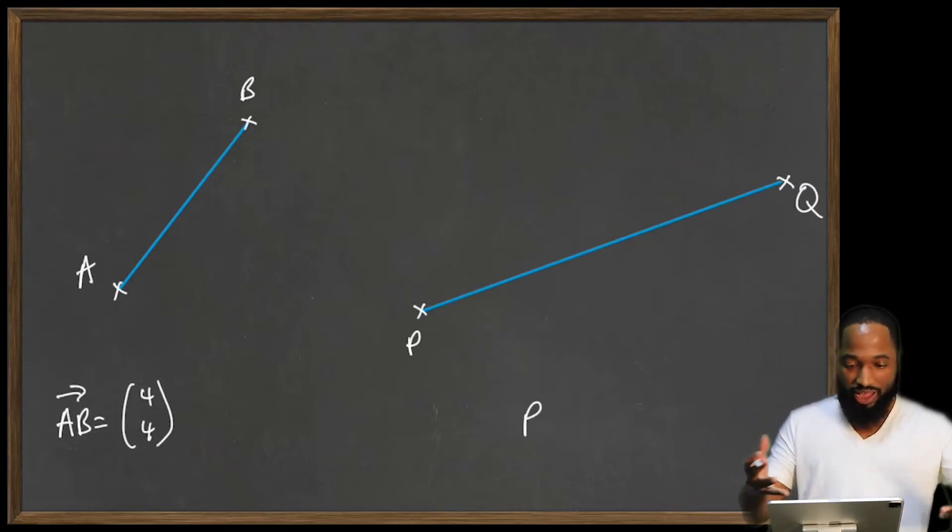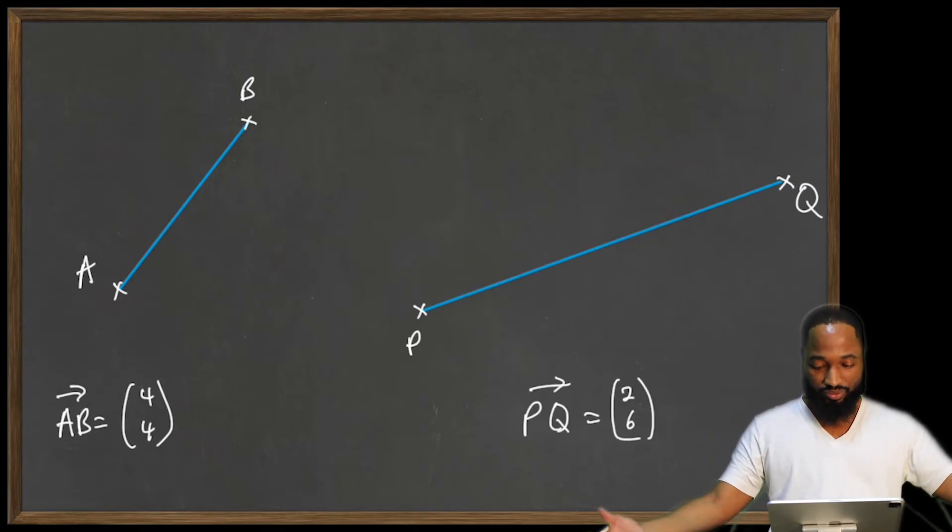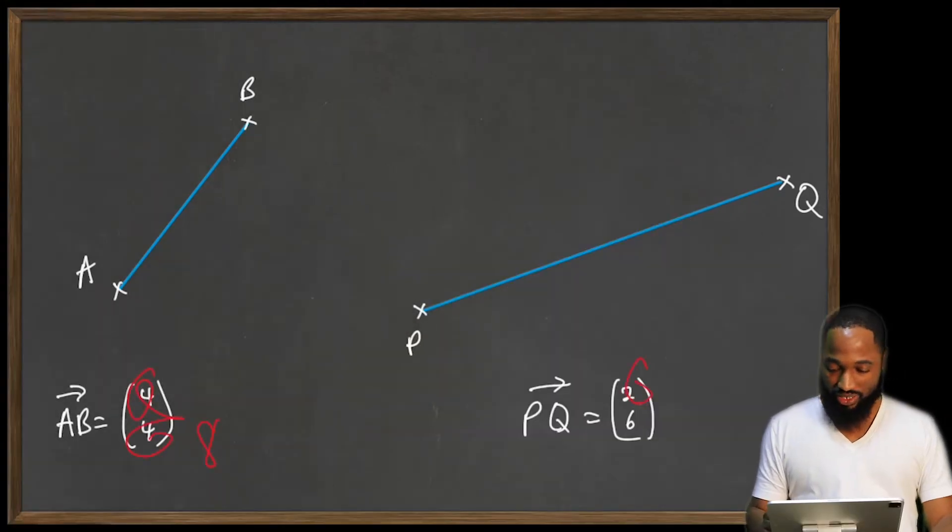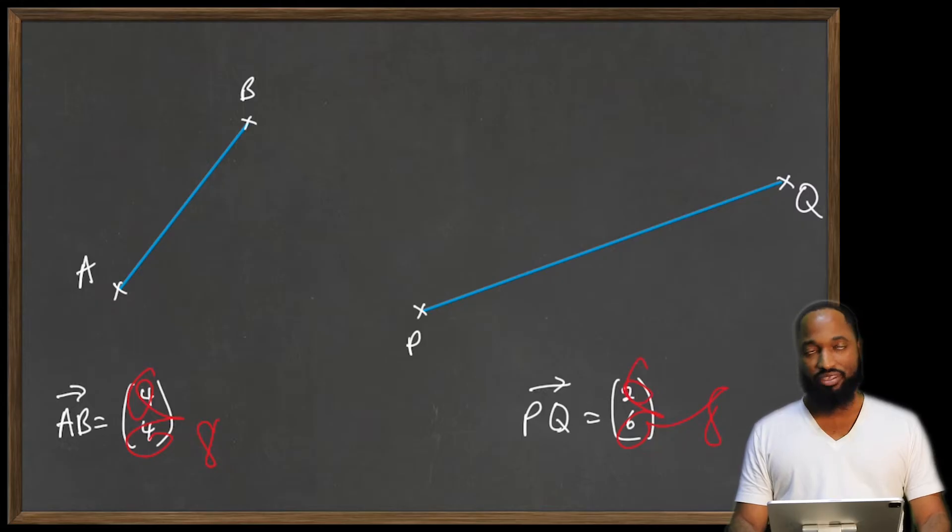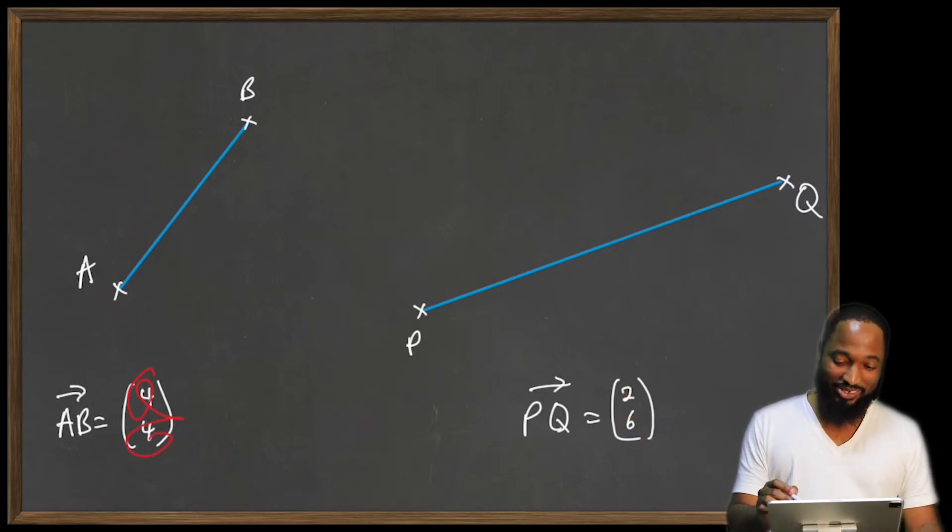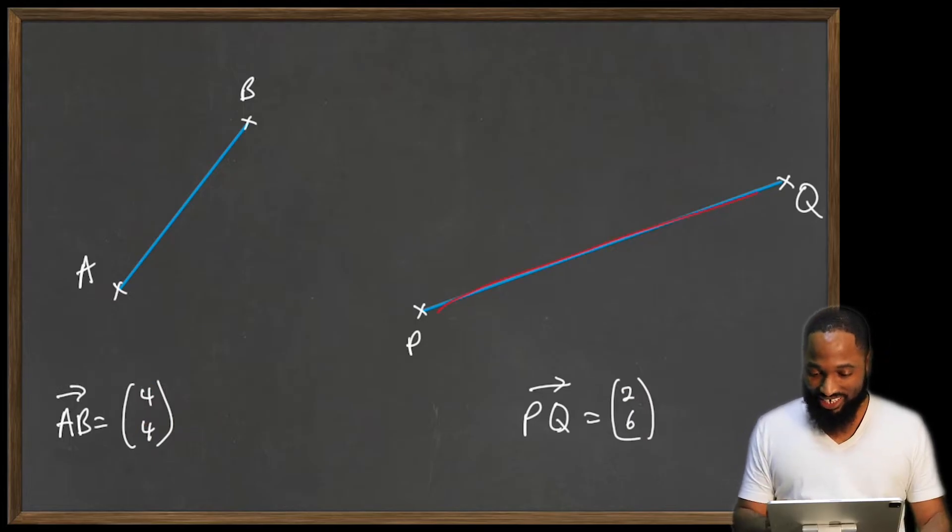Which one of these vectors you think will have the higher magnitude? Looking at this. Now, if I had the 4 and 4, I get 8. If I had the 2 and 6, I get 8. That actually has nothing to do with y'all. Well, you're going to find the magnitude here. But looking at this, you can see this one looks longer, right? If they were drawn to scale, PQ has the higher magnitude.